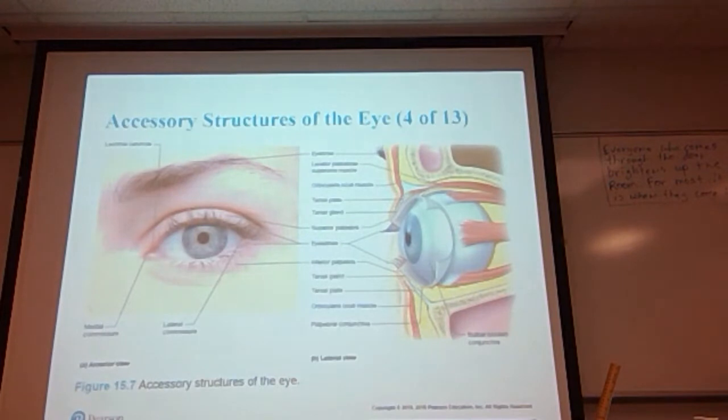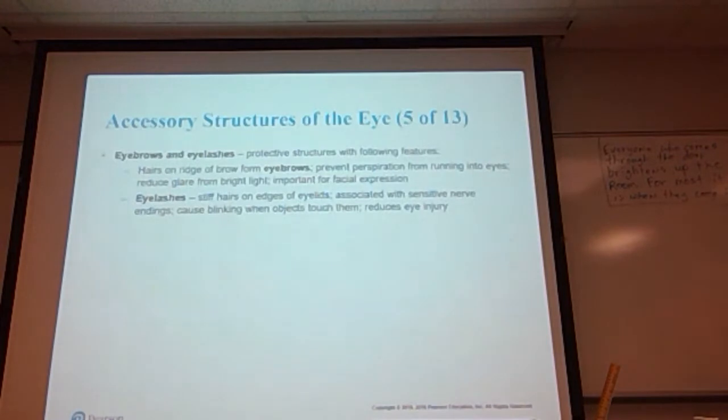Here are all of those structures—an actual picture of a human eye and then the artist's rendering. There's your eyebrow, levator palpebrae superioris muscle, orbicularis oculi muscle, the tarsal plate, the tarsal gland, the superior palpebrae, the inferior palpebrae, the lateral commissure, the medial commissure showing the lacrimal caruncle that I mentioned earlier.